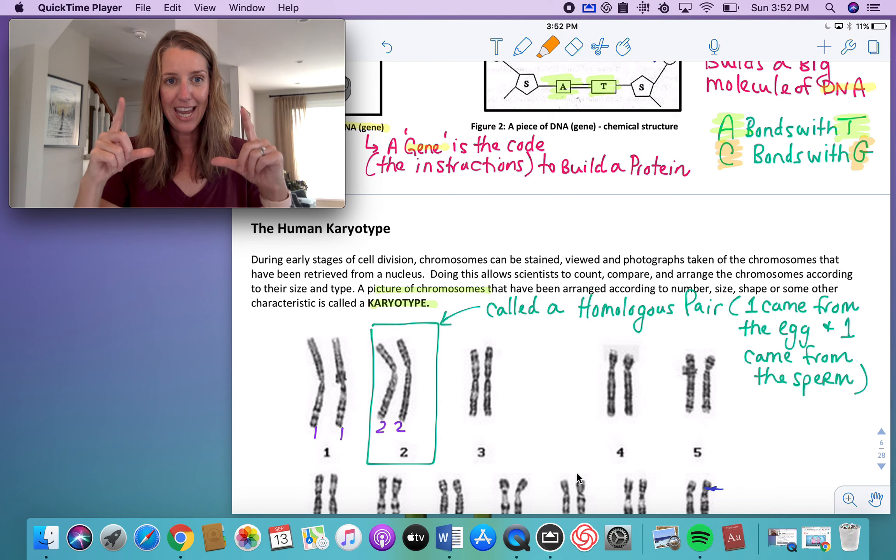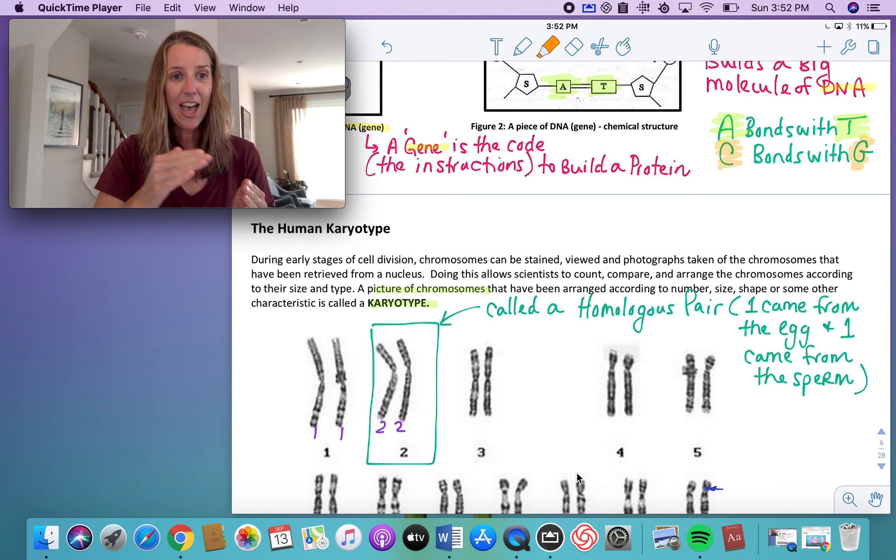And the karyotype is simply a photograph of humans and human chromosomes that are inside of the nucleus. So what do you notice? You notice that humans have 46 chromosomes. That's a good number to remember.